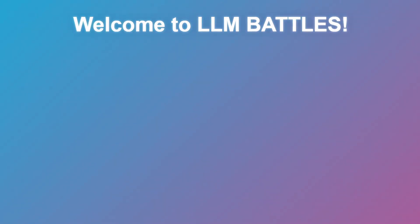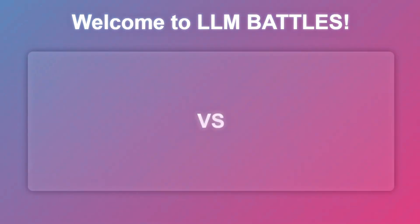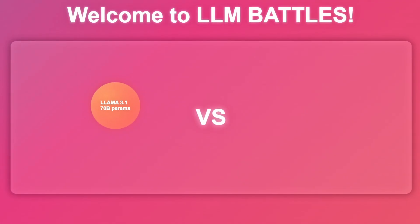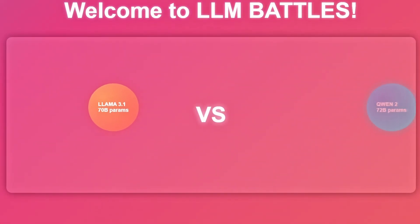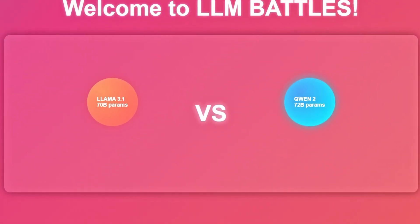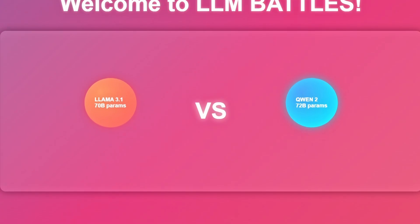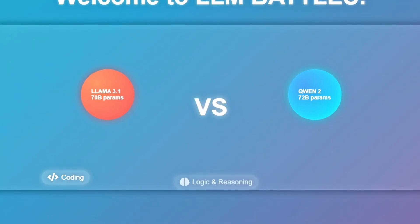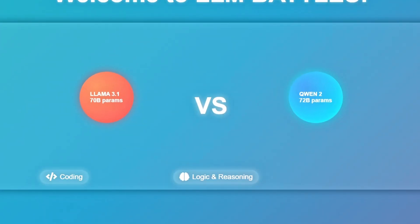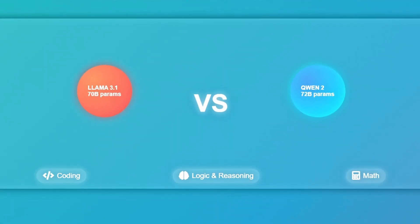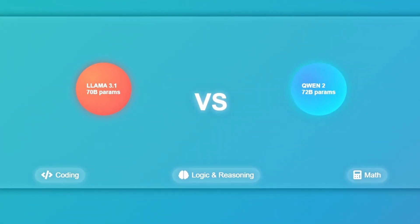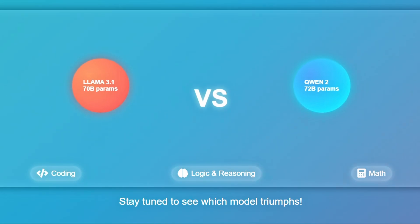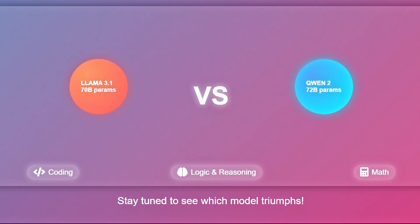Welcome to LLM Battles. In today's epic showdown, we're comparing the LLAMA 3.1 with 70 billion parameters against the Qwen 2 with 72 billion parameters. We'll put these powerhouses to the test in coding, logic and reasoning, and math challenges. Join us as we dive into this high-stakes battle and explore how these advanced models stack up against each other.